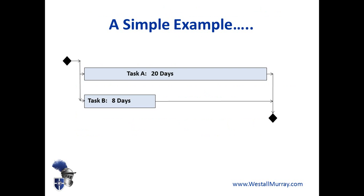On the left you have a start milestone, and as soon as the project starts both Task A and Task B can start, and when they're both done the project is over. When we talk about paths, we're just talking about analyzing things from a logic point of view. There are two routes you can take from that start milestone to that finish milestone — you could take a trip along Task A, walk along that plank if you like, or you could take a trip along Task B and then jump to the finish milestone. It's like two different stepping stones across a river.